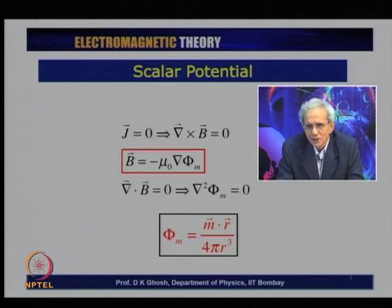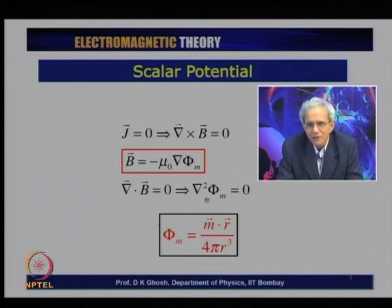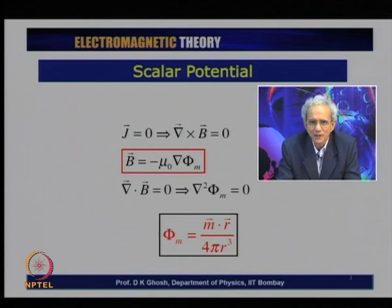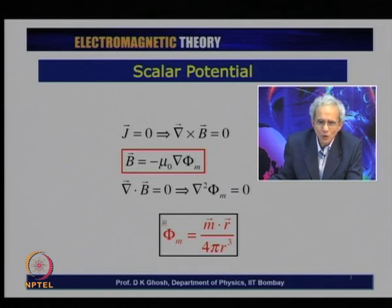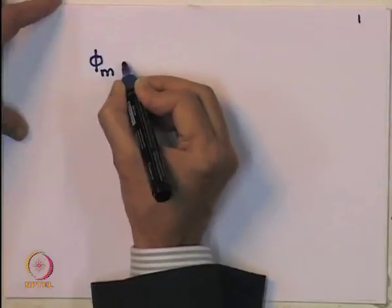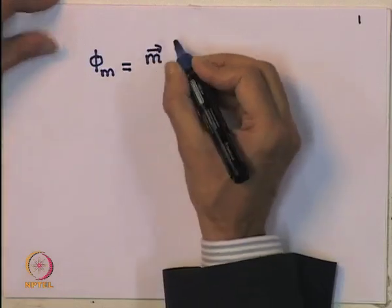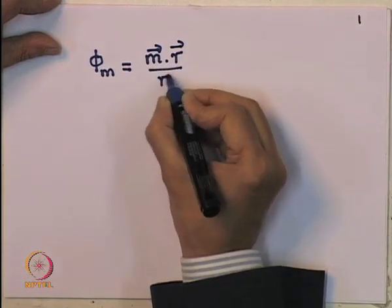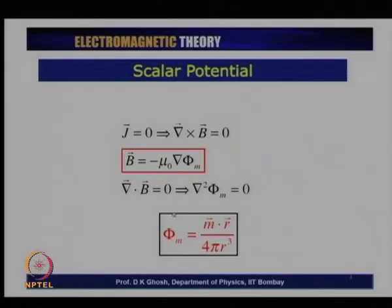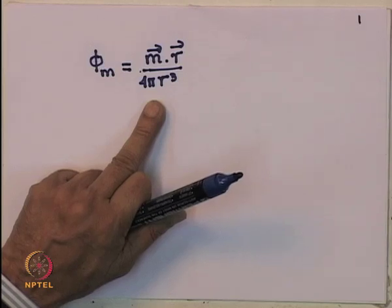This is an equation identical to Laplace's equation for the potential which we had derived for the electrostatic field. We had seen that when there is electric polarization P, the scalar potential was given by P dot r over 4 pi r cubed. Since this is the same Laplace's equation, we can obtain in a parallel way that phi_m, the magnetic scalar potential, is given by the magnetic moment m dotted with r over r cubed, with a 4 pi factor from the scalar potential definition.